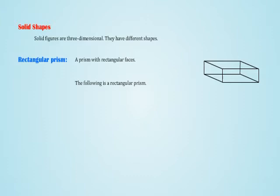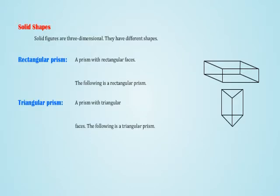6. Rectangular prism: A prism with rectangular faces. The following is a rectangular prism. 7. Triangular prism: A prism with triangular faces. The following is a triangular prism.